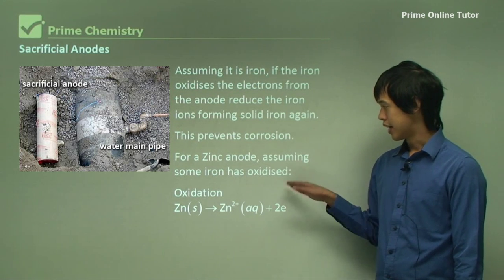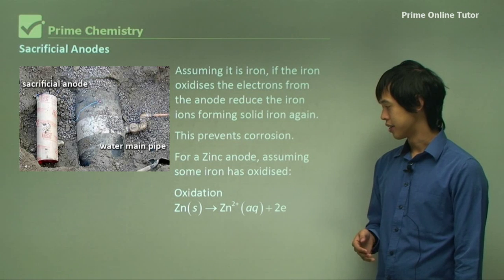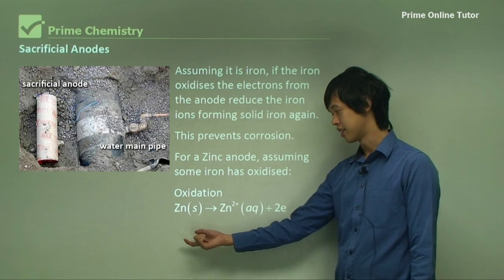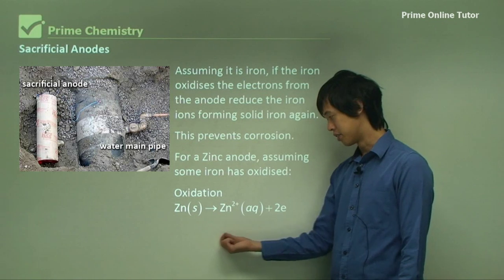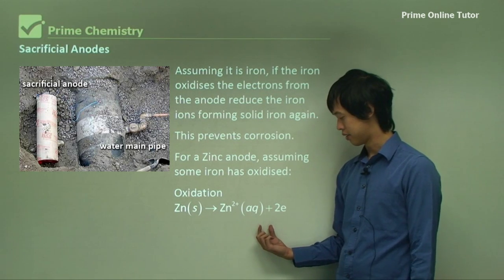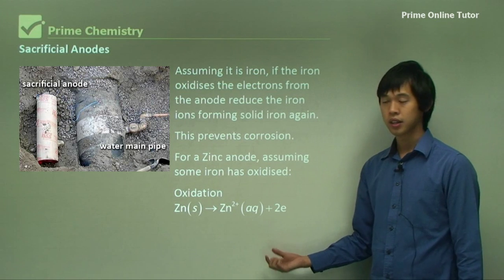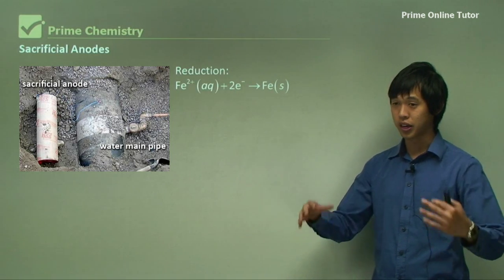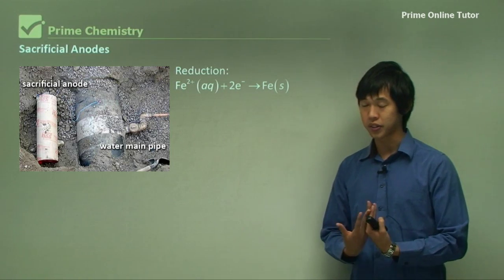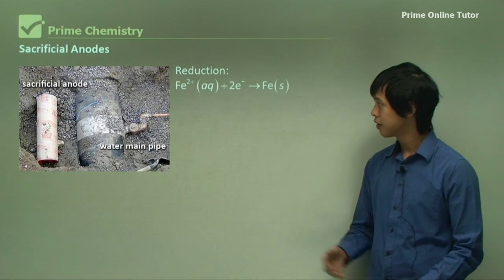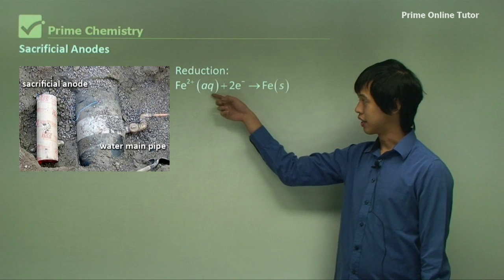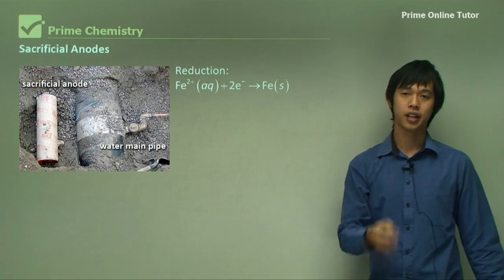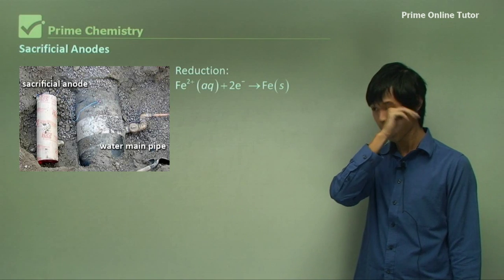For a zinc anode, assuming some iron has already oxidized, the oxidation reaction is: Zn(s) → Zn²⁺ + 2e⁻. The Fe ions then grab those two electrons and become solid iron again — back to steel, essentially.